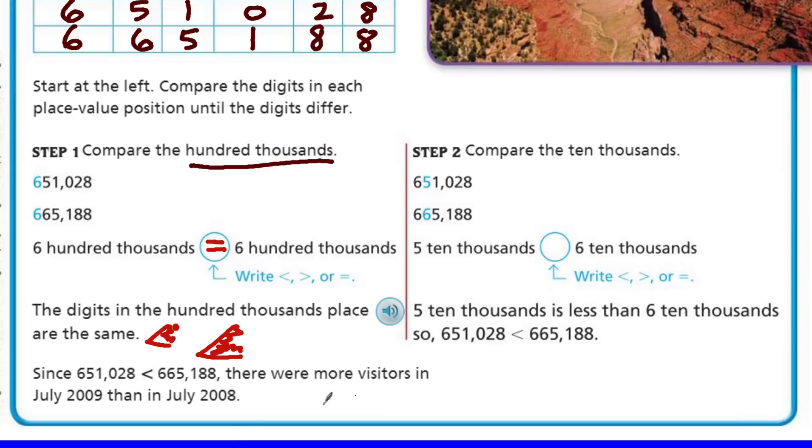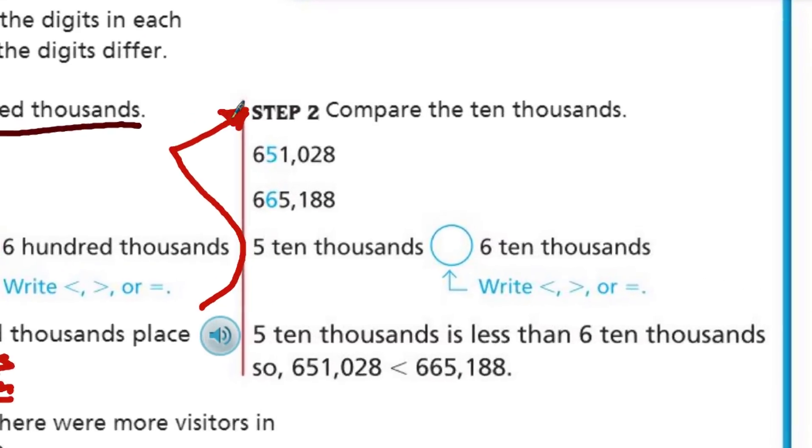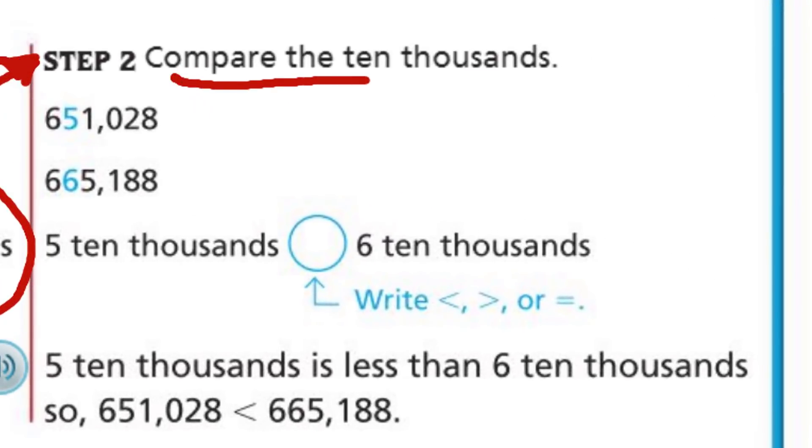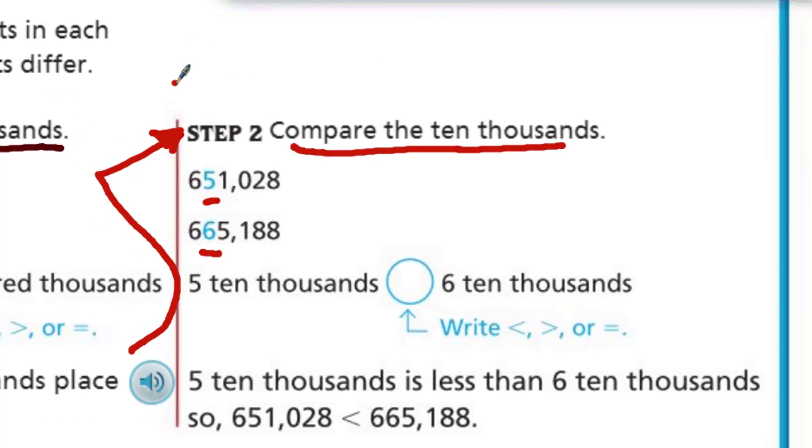So, we're going to compare the 100,000s. And you can see we compare them. And look at it. It's a tie. They both have sixes. 600,000s there, 600,000s there. So, we have to actually write they're equal. They're the same. So, we can't say that one number is larger than the other yet. Since it's a tie, then we move down.